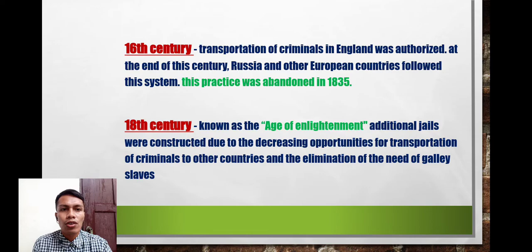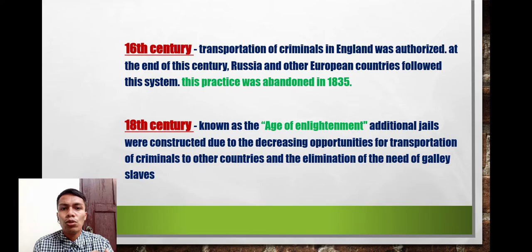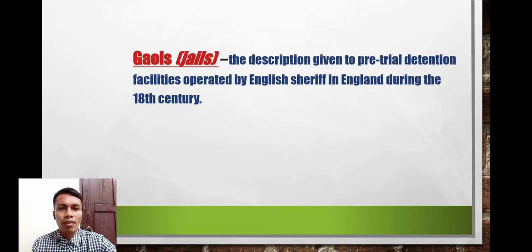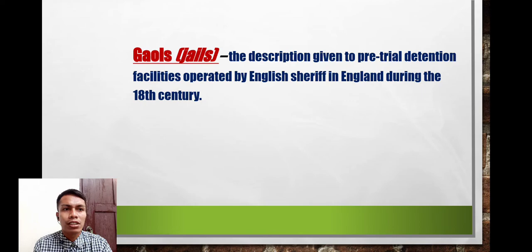In the 18th century, known as the Age of Enlightenment, additional jails were constructed due to decreasing opportunities for transportation of criminals to other countries and the elimination of the need for galley slaves. The term 'gaols' refers to pre-trial detention facilities operated by English sheriffs in England during the 18th century.